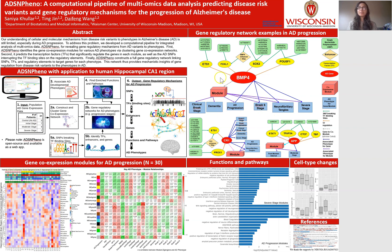For example, BMP4 is a key gene involved in neurogenesis. We identified over 20 SNPs that interrupt the binding of four transcription factors, such as ETS1. One SNP has been identified specifically near the enhancer that interacts with the BMP4 promoter. BMP4 belongs to a module associated with AD progression and severe stage and other phenotypes.